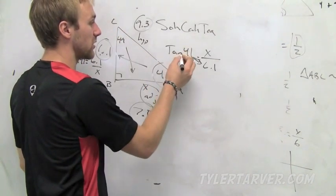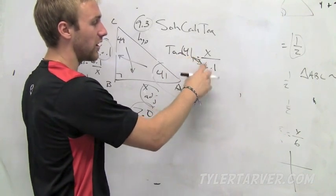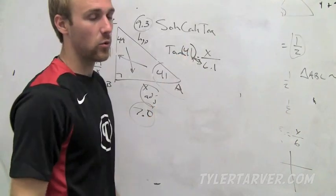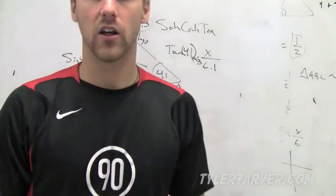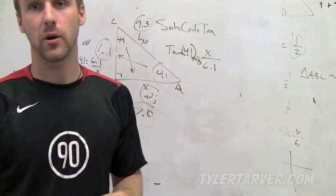Now the thing to remember is, when you type in your calculator, they give you a parenthesis. A lot of people put 41 times 6.1 and then close the parenthesis. No. Close that parenthesis on that tangent 41, then multiply it times 6.1. If you don't ever want to forget, you can put the number first and then multiply it, and you don't have to worry about closing parenthesis.